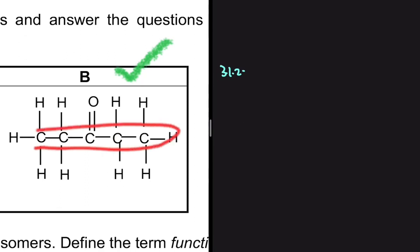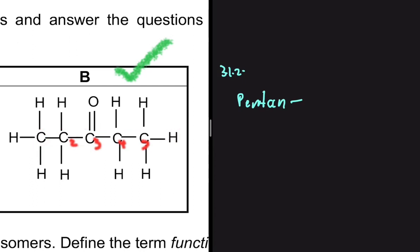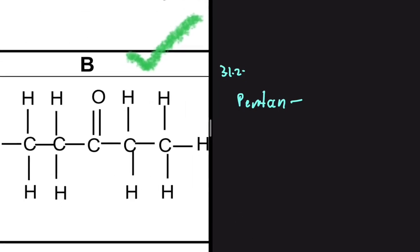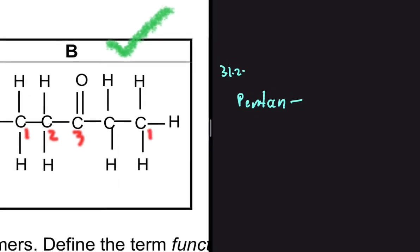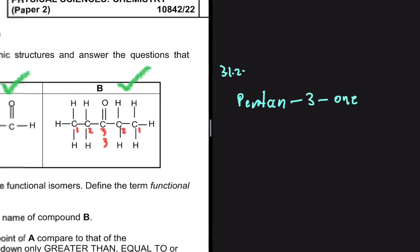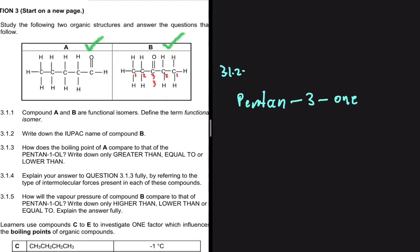Now we need the longest carbon chain. It is easy to see that the longest carbon chain has one, two, three, four, five carbons, so we know we have pent-. Now we're looking for the position of the carbon bonded to the oxygen. If we start numbering from the left we get one, two, three; if we start from the right we also get one, two, three. So our functional group is on the third carbon — we have pentan-3-one. That is the answer to 3.1.2.